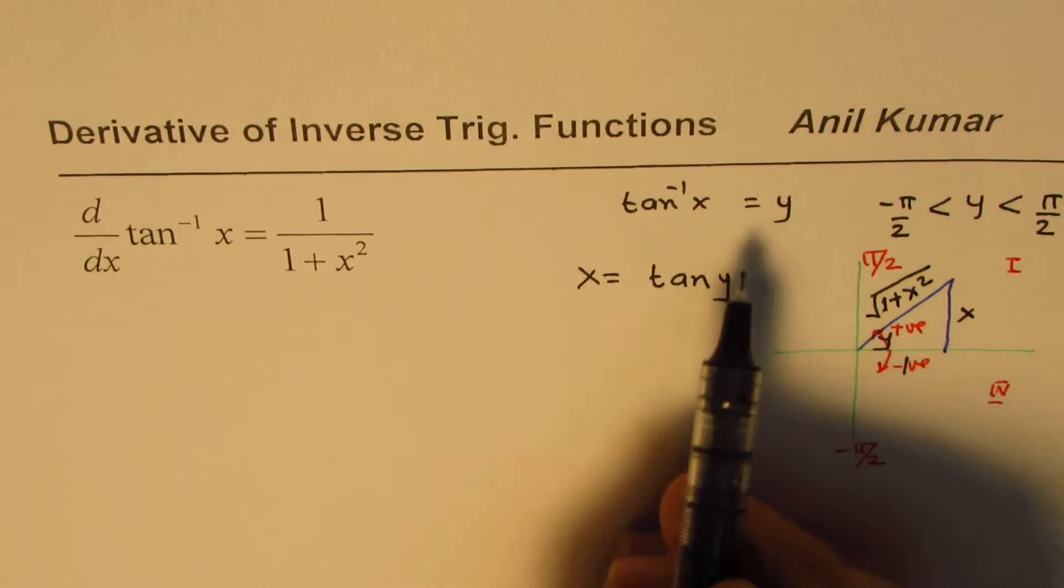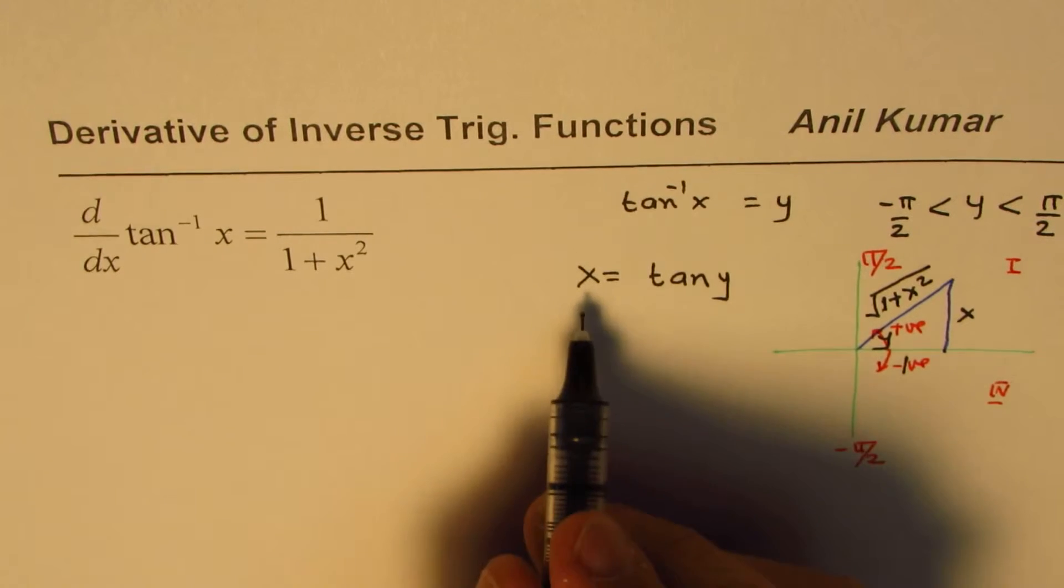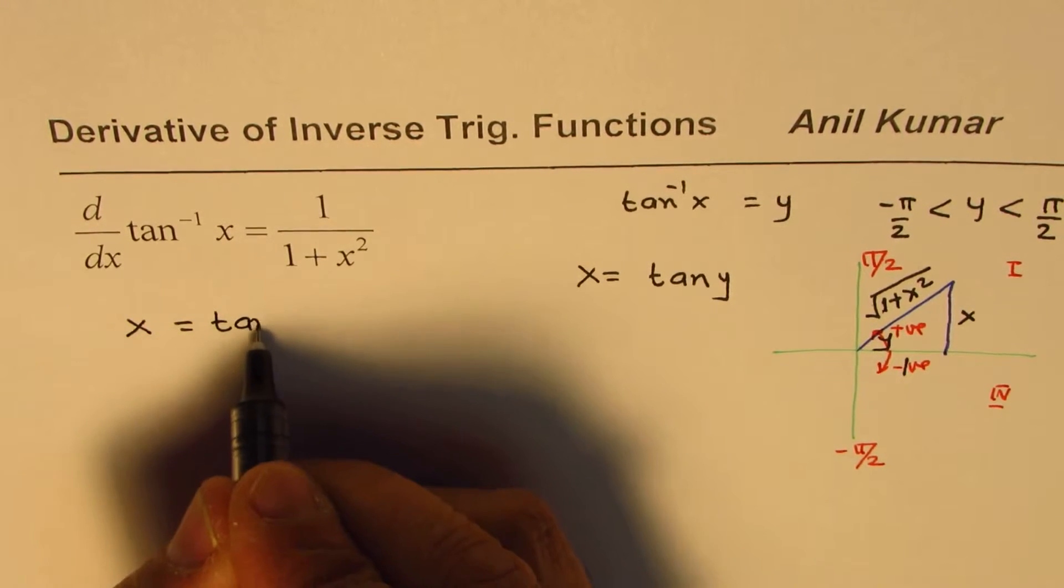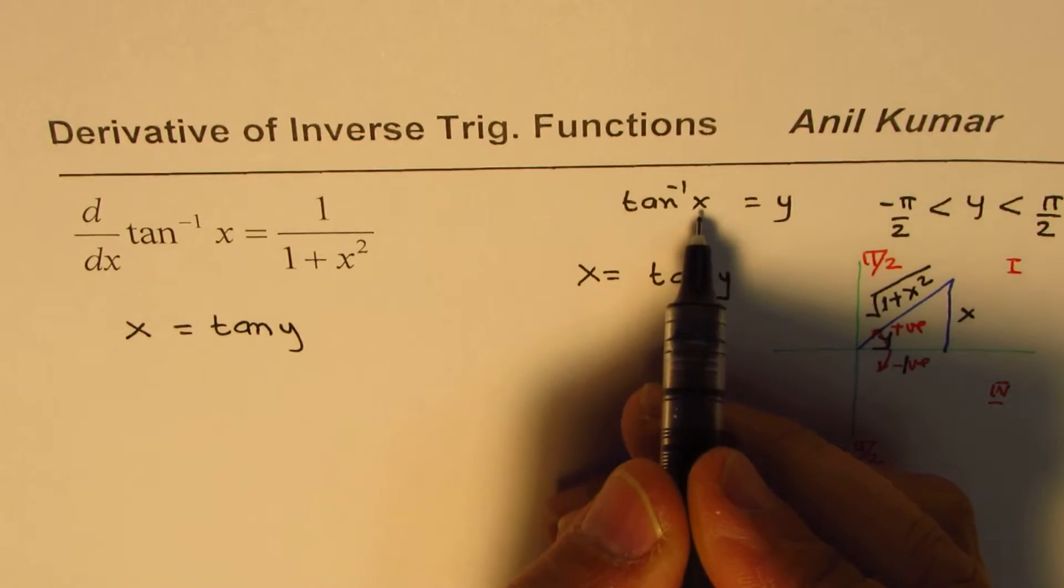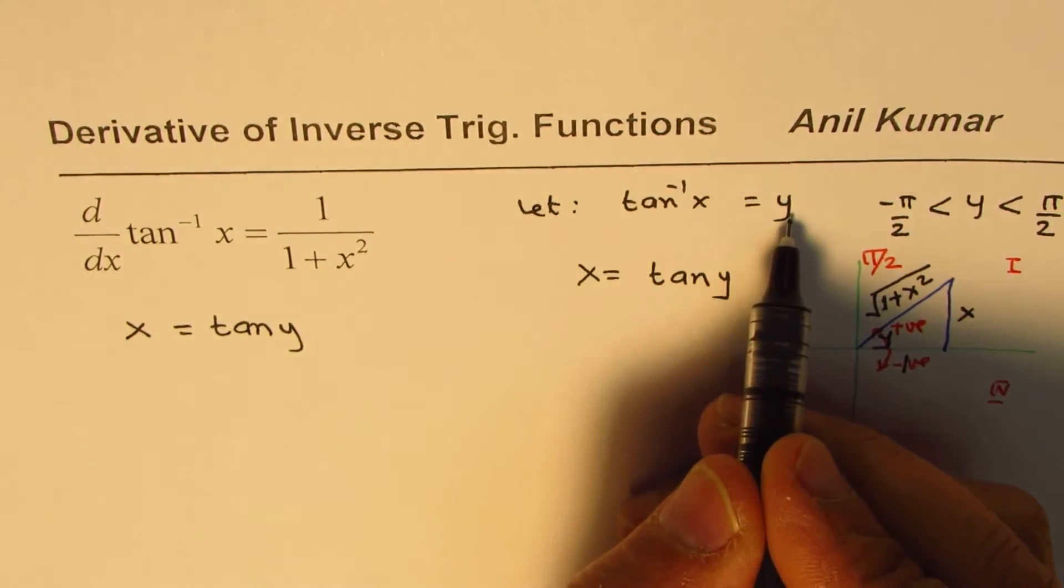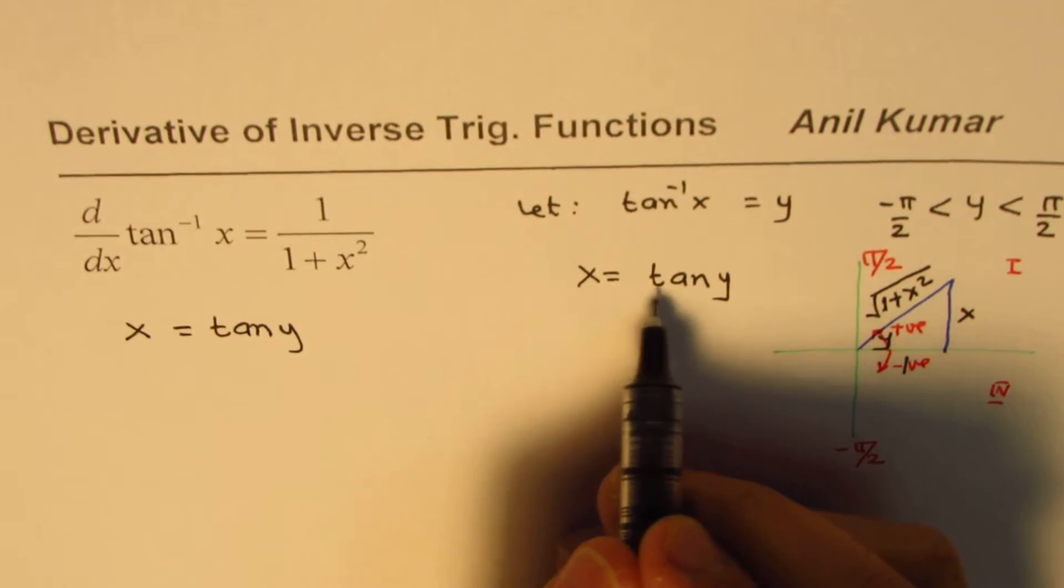Now let's find the derivative. What we have written here is x equals tan y. Since tan inverse x, we say let tan inverse x be y, so we can write this as x is tan y.